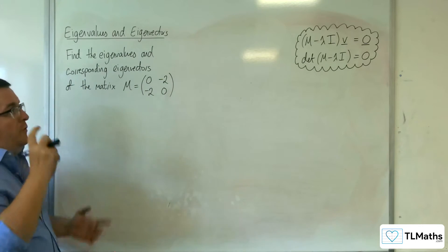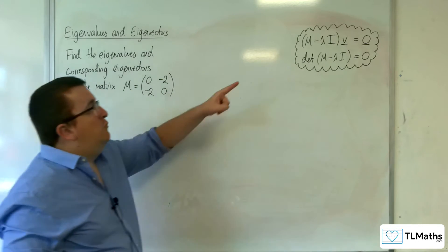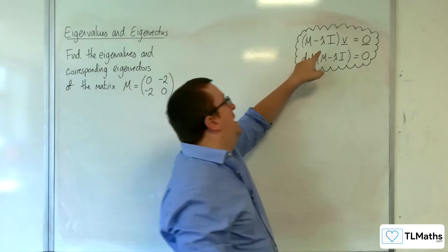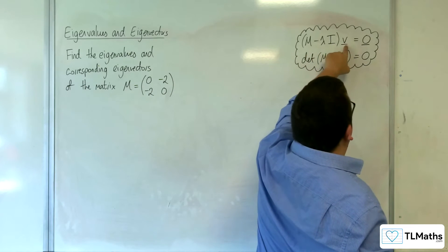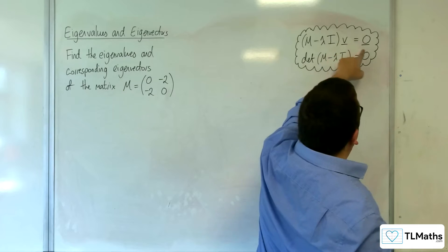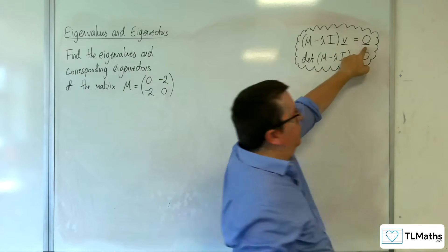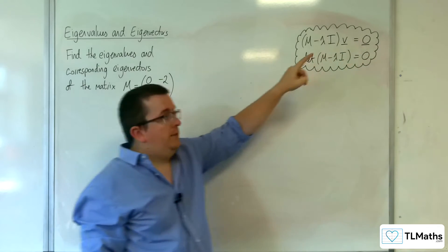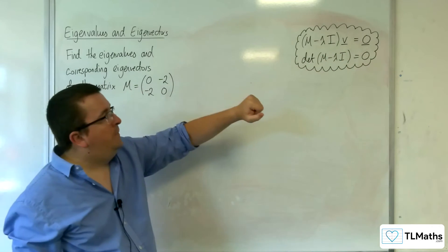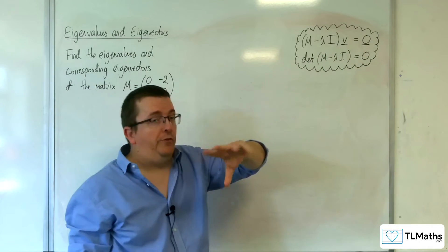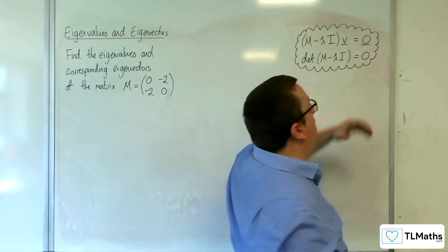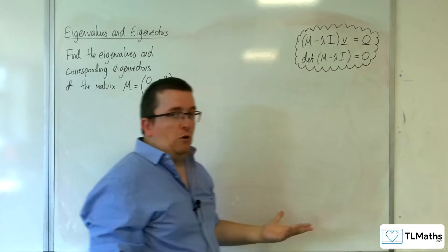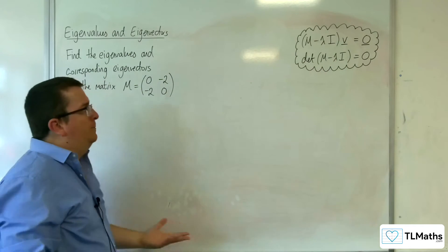From the previous video, we have that M take away lambda I times your eigenvector V will be equal to the zero vector. And the consequence of that was that the determinant of M take away lambda I must be equal to zero, as we saw.